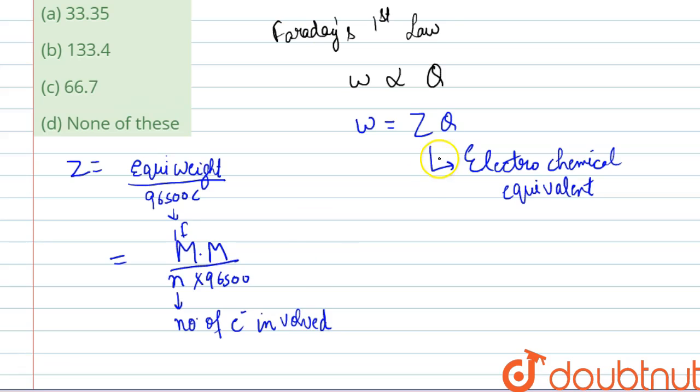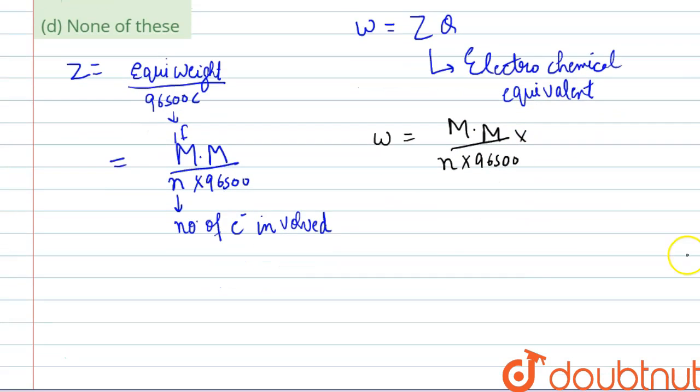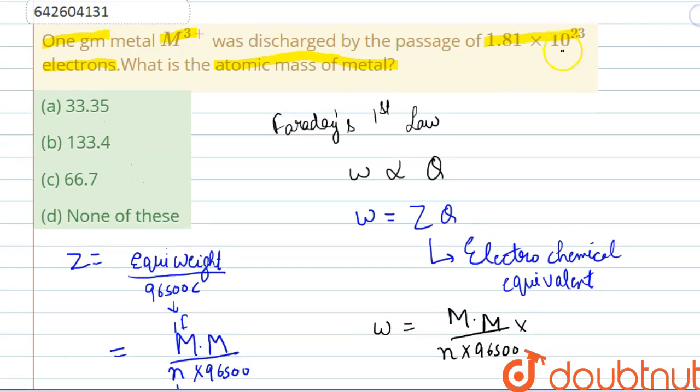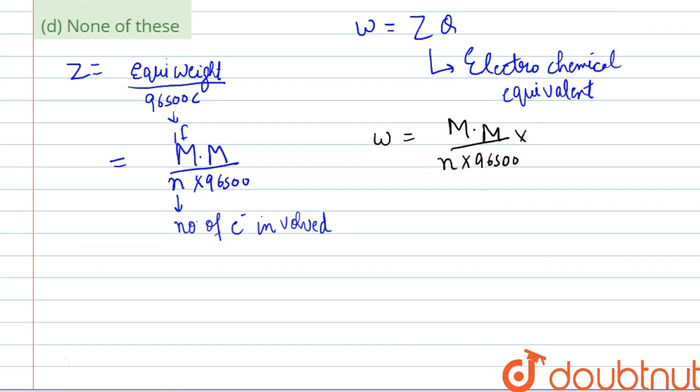Now we will write this as weight is equal to z is molar mass and we are given q. Now we are given that we have 1.81 × 10²³ electrons. Now we know that according to the principle of quantization of charge, q is equal to ne. This is known as the principle of quantization of charge.